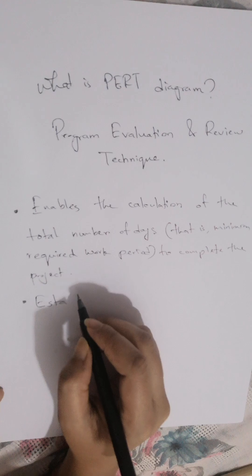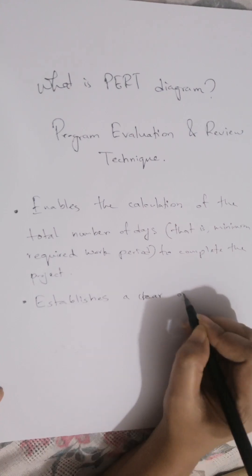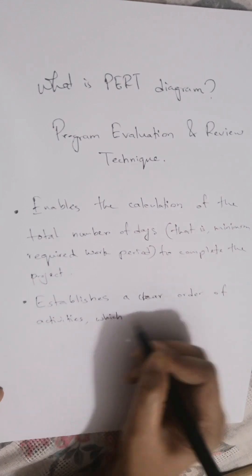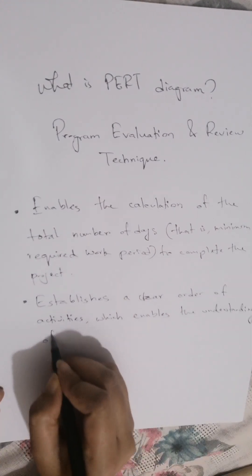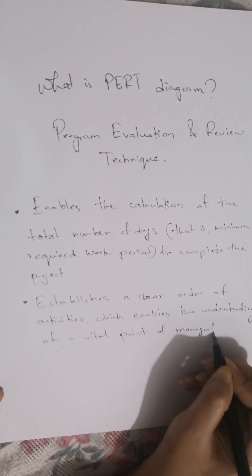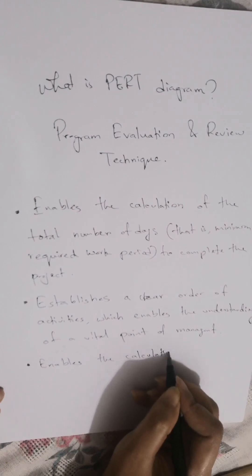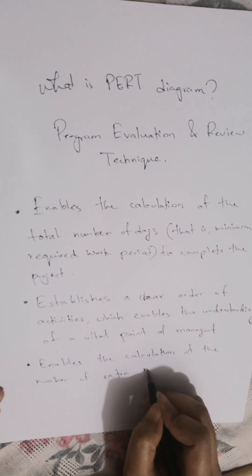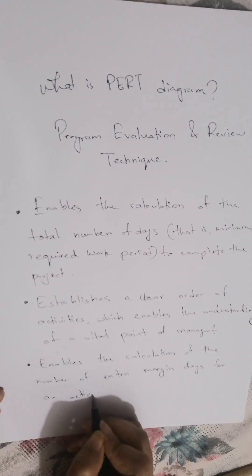PERT diagram, also known as PERT chart, establishes a clear order of activities which enables the understanding of a vital point of management. It also enables the calculation of the number of extra margin days for an activity.